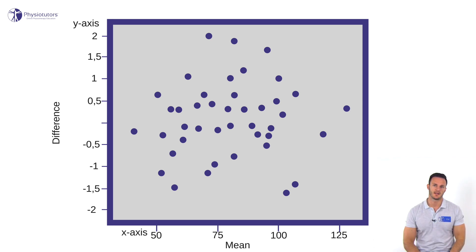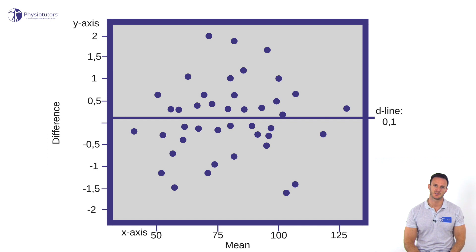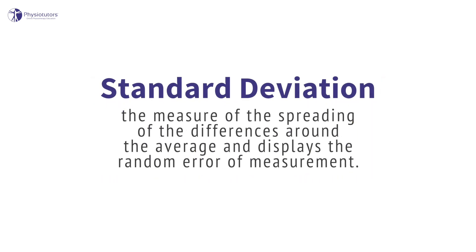With a lot of values, we are able to calculate a systematic measurement error, expressed with the letter D for difference. So if the average of all second measurements is 100 grams higher compared to all averages of the first measurements, the average systematic measurement error will be 100 grams, and on our D-line it will be drawn at 0.1. The distance of all points from this line represents the size of the measurement error. The closer the points are to the D-line, the smaller the measurement error. Per definition, 95% of all differences between the two measurements lie between D minus 1.96 times the standard deviation and D plus 1.96 times the standard deviation of the data set. The standard deviation is the measure of the spreading of the differences around the average and displays the random error of measurement.